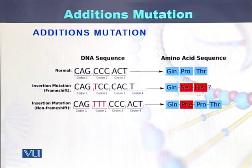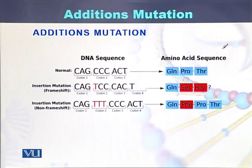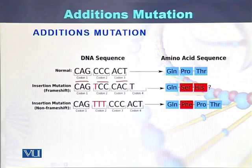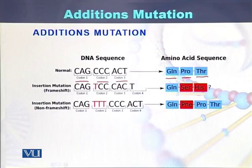This is a second example of the addition mutation. In this diagram, we can see that this is the normal sequence of the DNA in the form of codons — codon 1, codon 2, codon 3. These codons encode for the amino acids glutamine, proline, and threonine. So when there is addition of a single nucleotide in the form of T here,